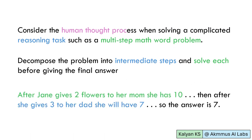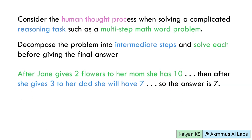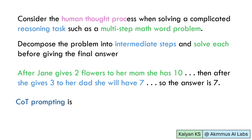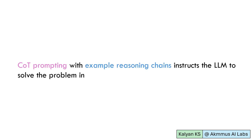It is quite common to decompose the problem into intermediate steps and solve each before giving the final answer. Here is a simple example. Here, the final answer is arrived at based on the intermediate steps. Chain-of-thought prompting is heavily inspired by this observation. Chain-of-thought prompting with example reasoning chains instructs the LLM to solve the problem in a step-by-step manner rather than arrive at the answer directly.